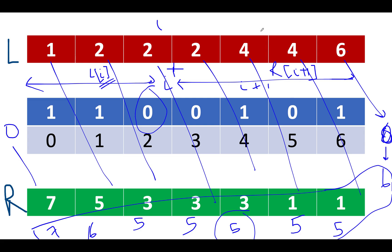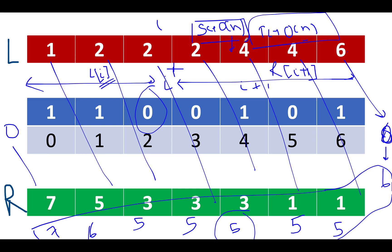The time complexity of this approach is O(n) because we iterate through the array two to three times. The space complexity is O(n) since we create new arrays, but it can be reduced to O(1) since we only need the previous value. For simplicity, let's understand it with O(n) first.